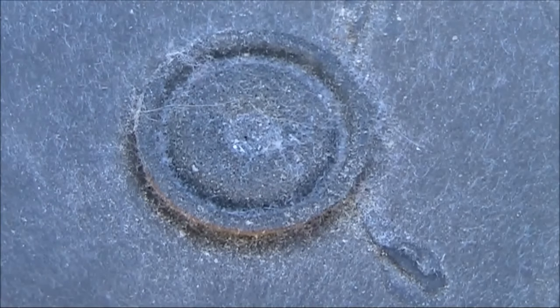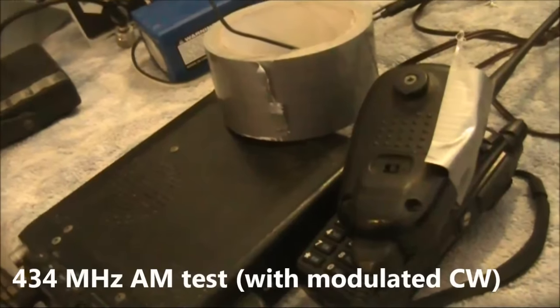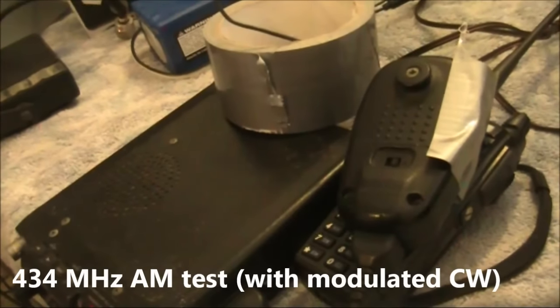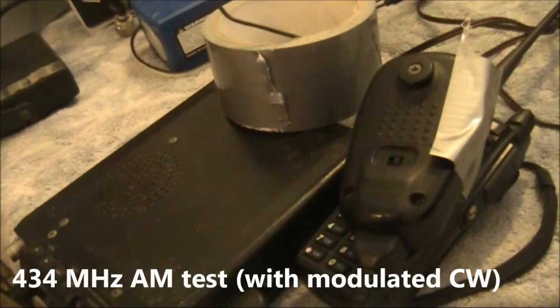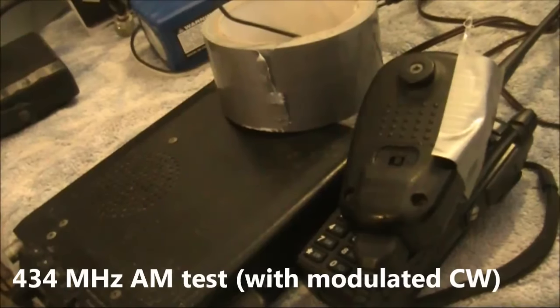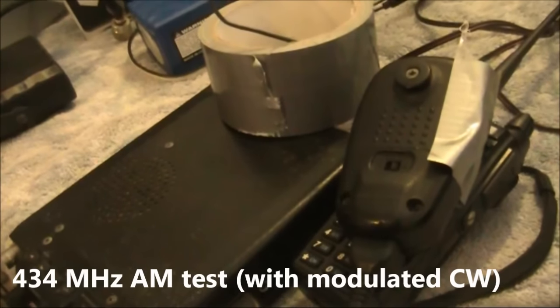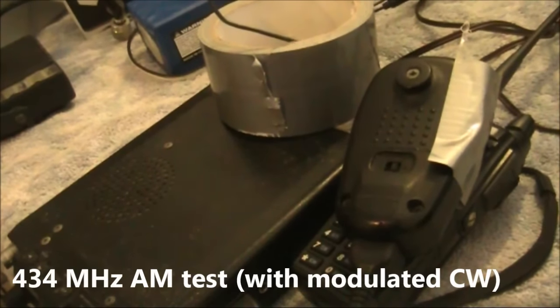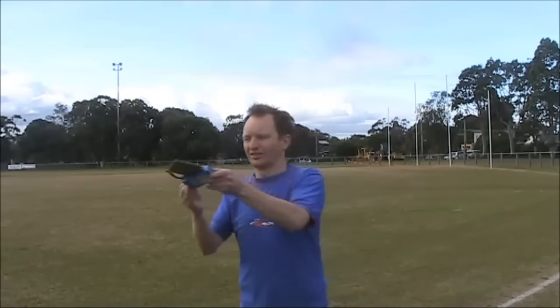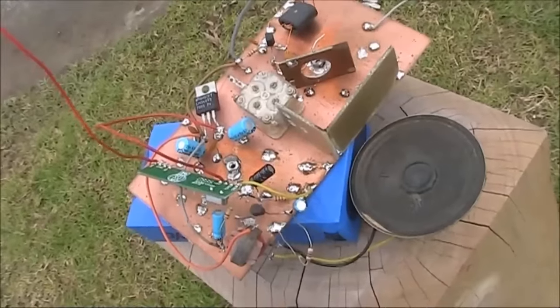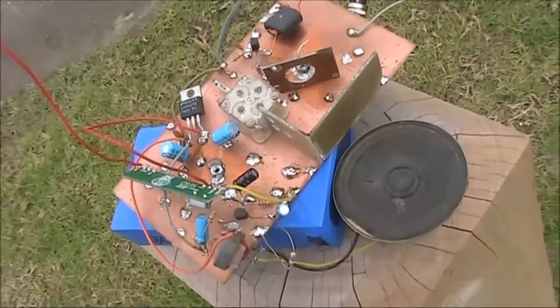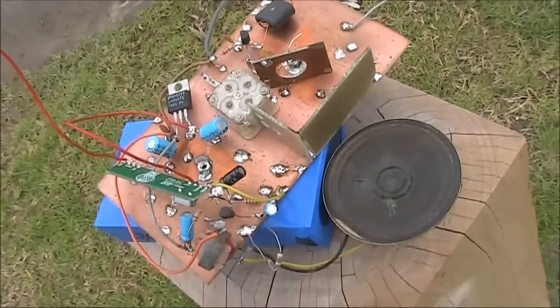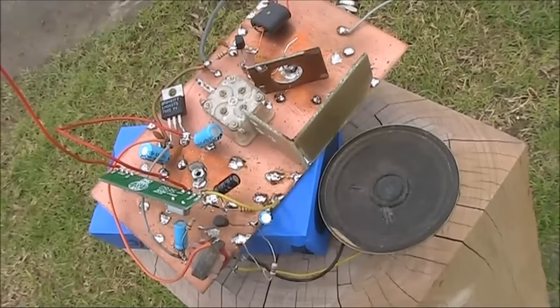The next experiment is to do a range check with the FTA-170 operating as a transmitter, this time transmitting modulated CW on 434 MHz. About 400 meters away, the signal could be clearly heard.